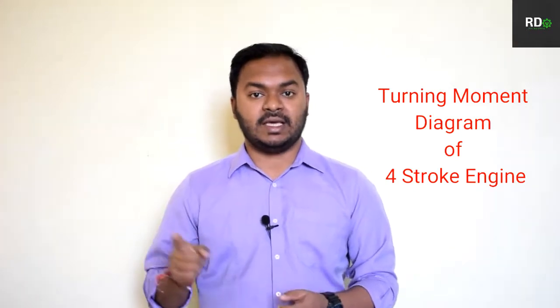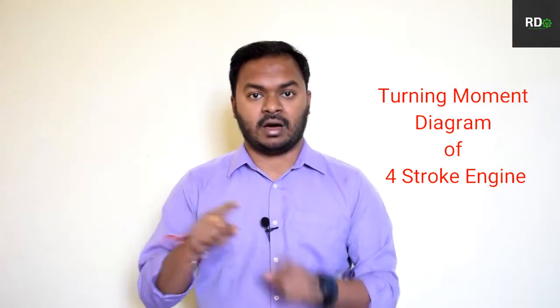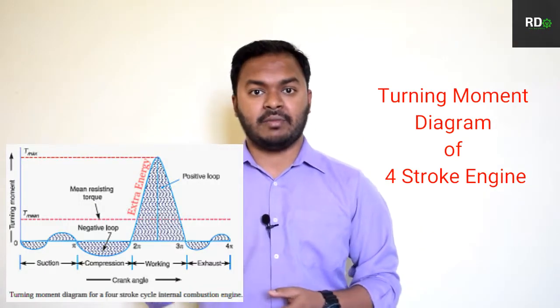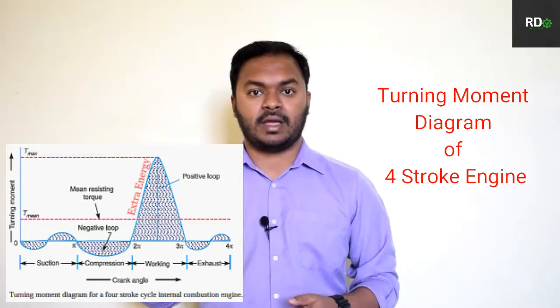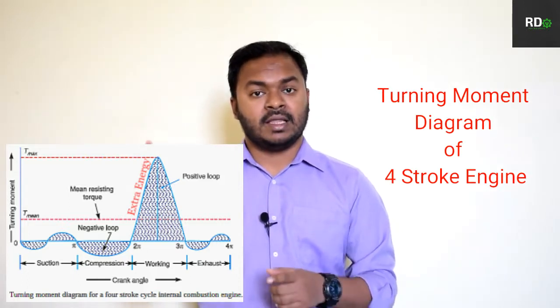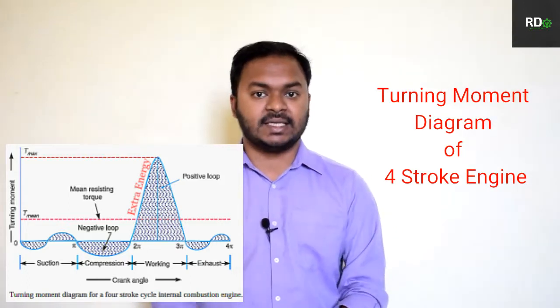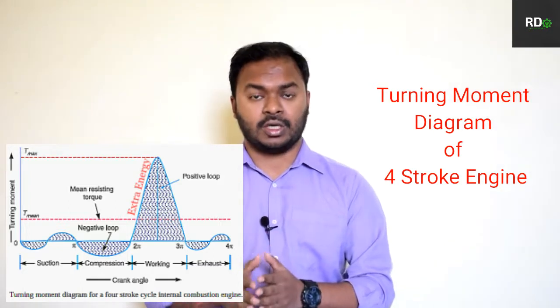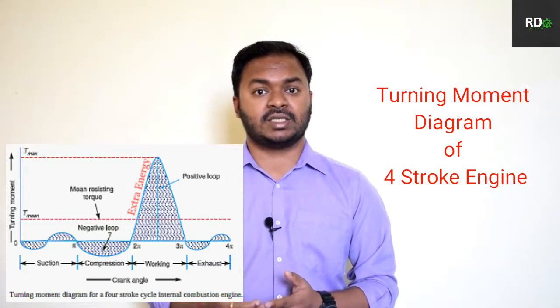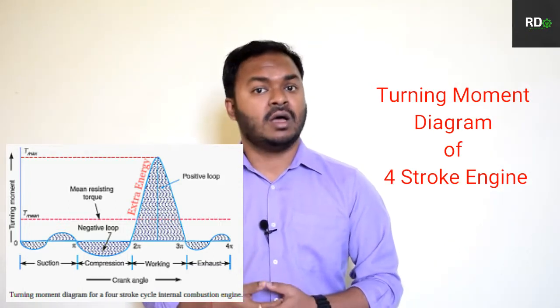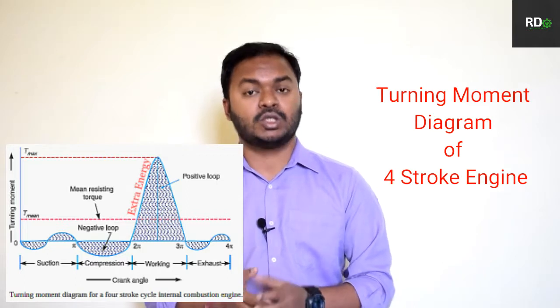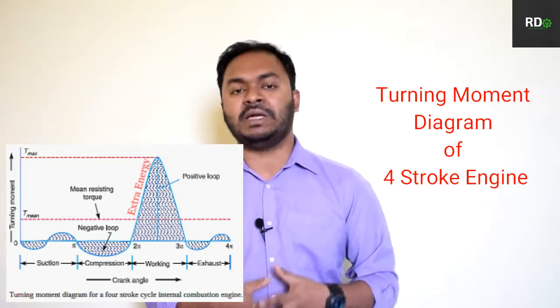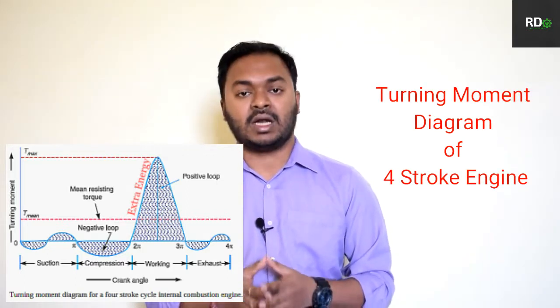You can see the turning moment diagram on the right-hand side. In the y-axis it shows the turning moment or the torque, and in the x-axis it shows the angle of the crankshaft.